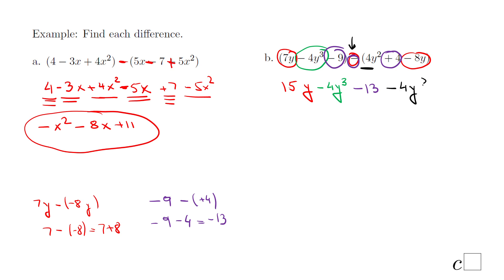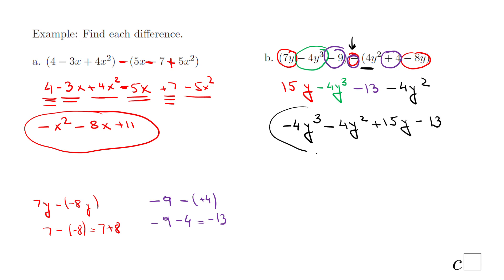Don't forget we also have a minus 4y² term. Now I'll rearrange from largest degree to smallest: negative 4y³, minus 4y², plus 15y, minus 13. That is the final answer. If you enjoyed this lesson, don't forget to click the like button and come back to C Squared for more help — thank you!